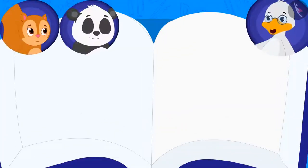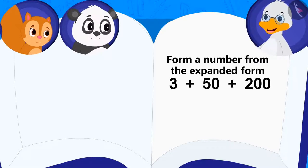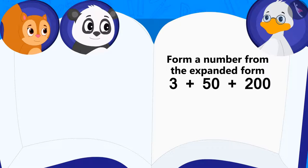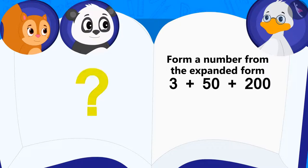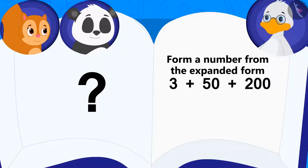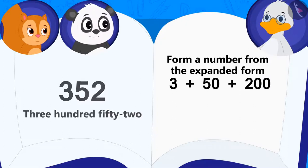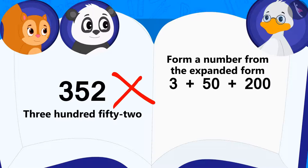Can you form the number from this expanded form? Uncle asked his first riddle. Chanda and Golu started thinking about what the answer could be. Children, you also think about the answer to this riddle. Chanda answered at once: 352. Do you think Chanda's answer is correct? This answer is wrong.